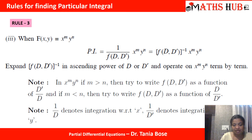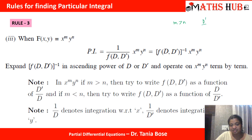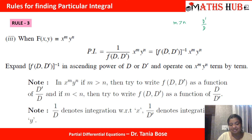If m is less than n, we write it as a function of D/D'. Here 1/D denotes integration with respect to x, and 1/D' denotes integration with respect to y. So the simple rule is: when m > n, expand as D'/D; when m < n, expand as D/D'; and when m = n, it's your choice — you can expand either as D'/D or as D/D'.